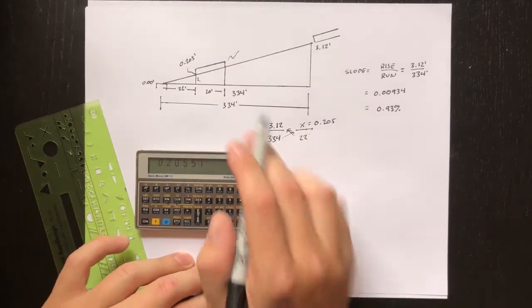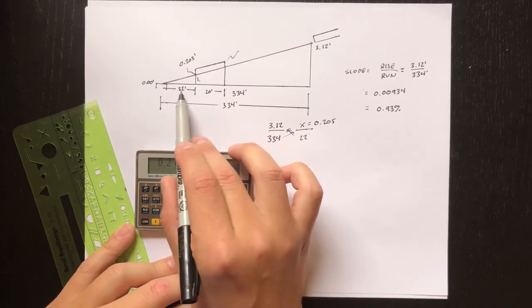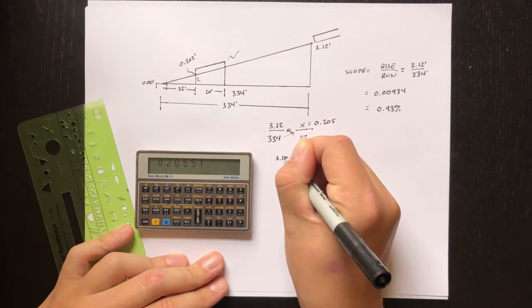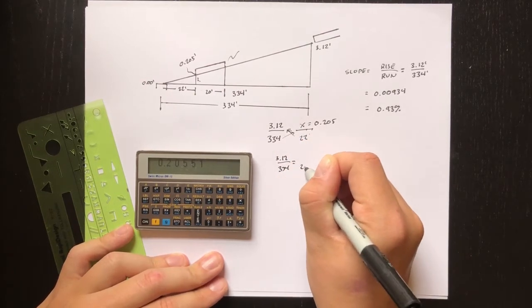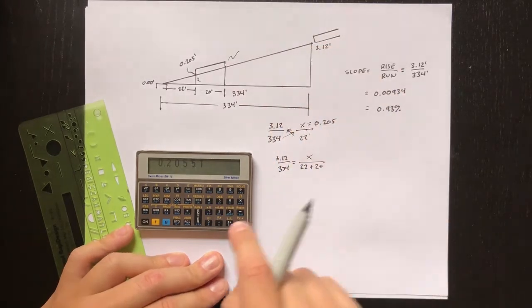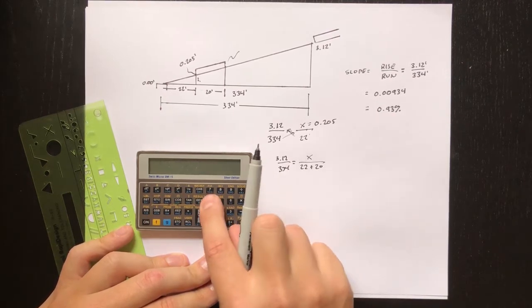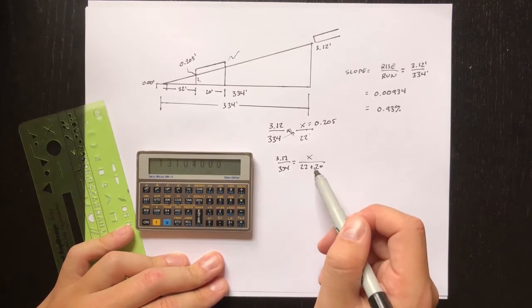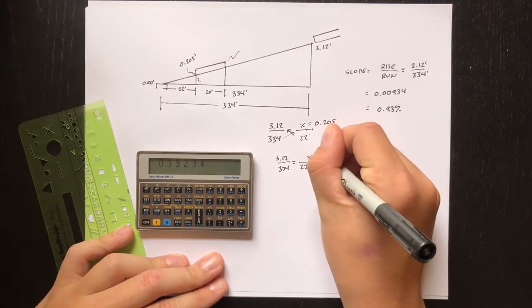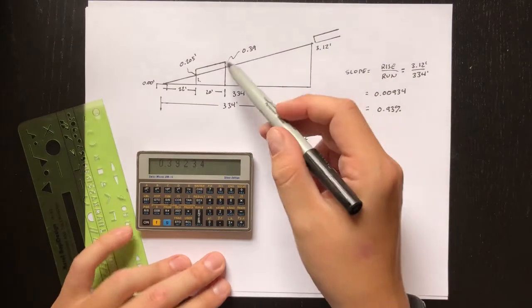Now we can do the same thing for the bottom, except this time the adjacent side of our triangle is the sum of these two - it's 22 plus 20 feet. So we have the same proportion, 3.12 over 334, except this time we do 22 plus 20, which gives us 42. Now we're trying to find this height. So we do 3.12 times 22 plus 20, which is 42, and then we divide by 334. That gives us 0.39. So that's the elevation we need to set the headwater to.